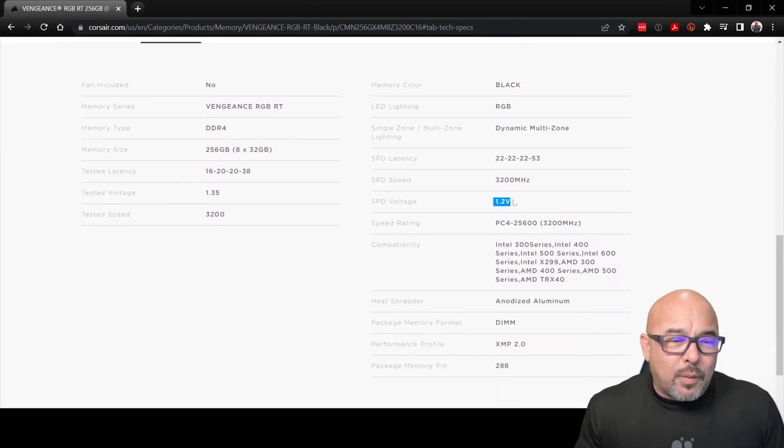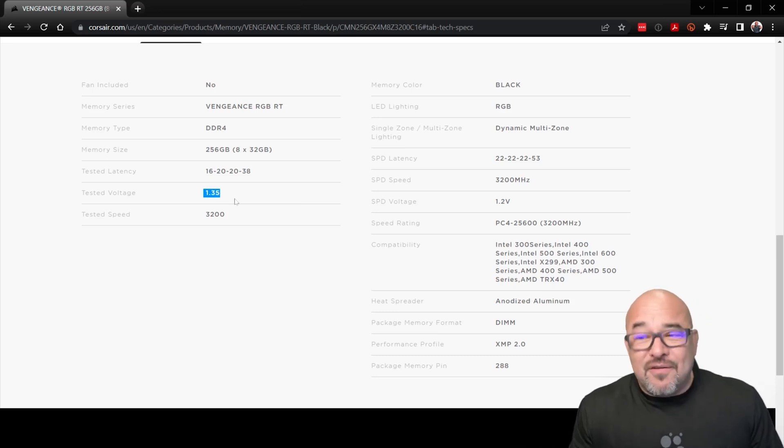If I go to the tech specs right over here, then we can see that again we get more details out of it. Now look over to the right here, it says the SPD voltage is 1.2 volts. That's again the standard DDR4 voltage. These particular memory modules are designed to handle what we call overclocking. That means you apply extra voltage to them and you can get a performance boost out of them by doing so. It's been tested up to 1.35.